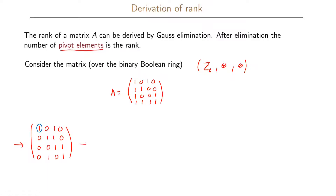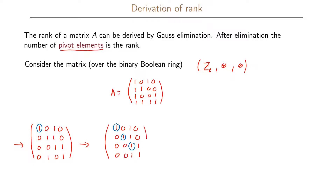In the second step, the first row already has its pivot. The second row also has a pivot element. For the third row, since the second column is 0, we already have a pivot element. For the fourth row, we add it to the second row to get 0 0 1 1.